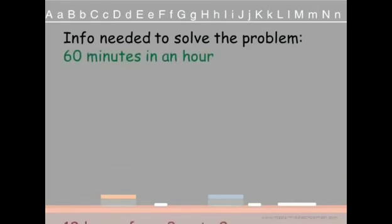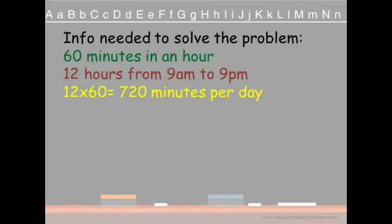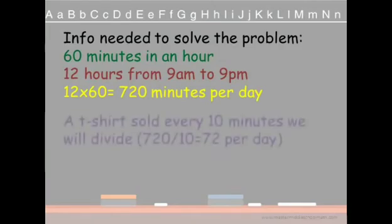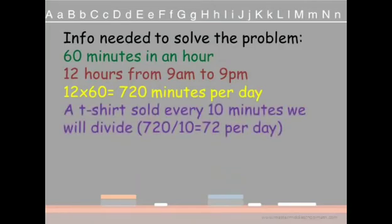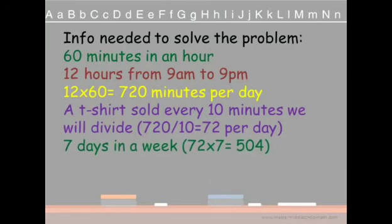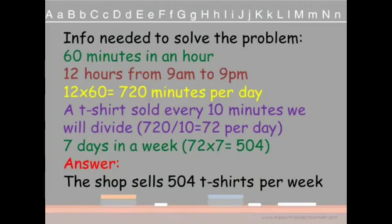Here's the information needed to solve our problem. There are 60 minutes in an hour and 12 hours from 9 a.m. to 9 p.m., so we multiply 12 times 60 to get 720 total minutes per day. A t-shirt sells every 10 minutes, so 720 divided by 10 equals 72 per day. The question asked how many per week, so 72 t-shirts per day times 7 days gives us 504 t-shirts. The shop sells 504 t-shirts per week. Good job.